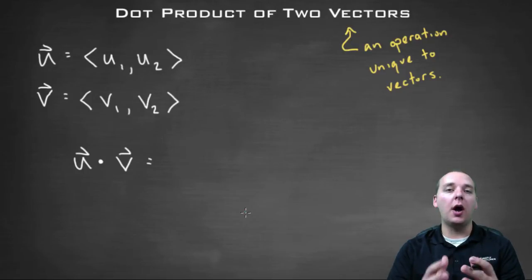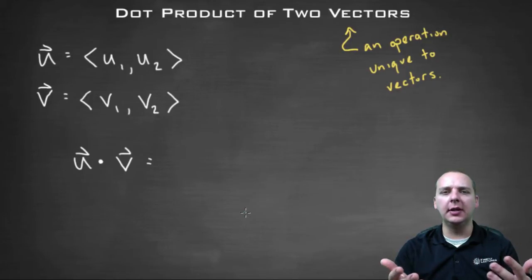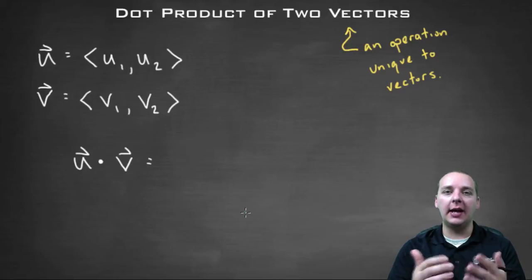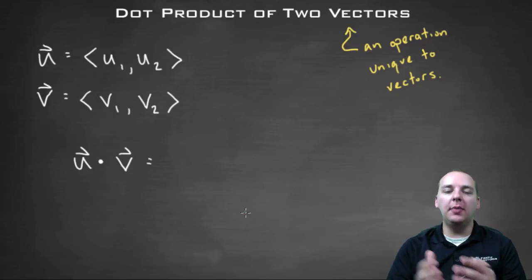In this video we're going to talk about a new operation that's applied to vectors called the dot product. Now this particular operation will be brand new to you, because like earlier when we talked about addition and subtraction, we've already done addition and subtraction for numerical values for many years. So it was an easy extension to translate that to adding and subtracting vectors. The same thing with scalar multiplication.